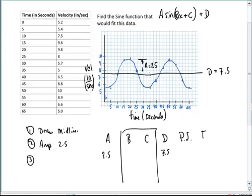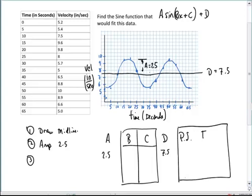The phase shift is the starting point. The period is the duration to the end point. So when we look at the graph, our starting point is at 10.